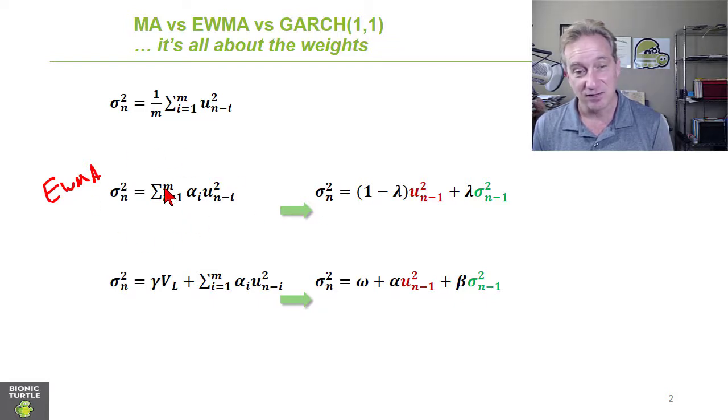then the recursive version of this is the exponentially weighted moving average, which is elegant because we don't have to go specifically back into the window. And so under the exponentially weighted moving average, the estimate of today's variance is recursive. It's a function of the previous day, yesterday's variance estimate,